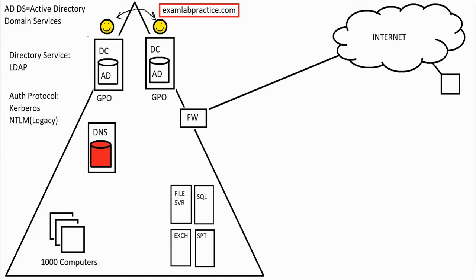With Azure, you pay for the CPU, RAM, and storage you use. With Microsoft 365, it's all license-based — you purchase subscriptions with a certain number of licenses and issue them to users who can then take advantage of the various features.